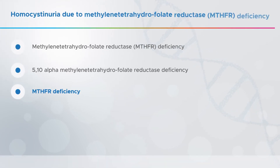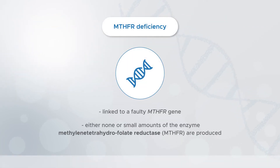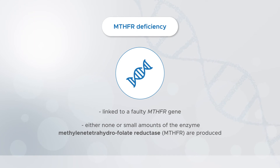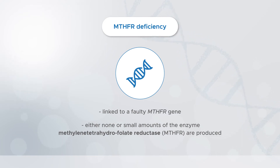The second form of homocystinuria also has lots of different names, but is often referred to as MTHFR deficiency. This form is caused by faulty MTHFR genes. The MTHFR gene holds the instructions needed to make the enzyme called methylene-tetrahydrofolate reductase, which helps regulate the levels of homocysteine in your body.